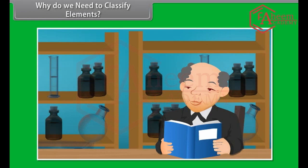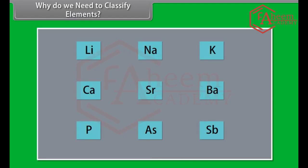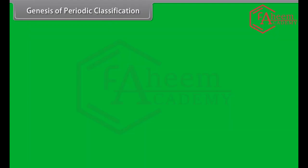Why do we need to classify elements? Before the beginning of the 18th century, few elements were known. As time passed, a large number of elements became known, and today we know 114 elements. It became quite essential to classify them. The classification of elements led to the formation of the periodic table, which may be defined as a table giving the arrangement of all known elements according to their properties, so that similar elements fall within the same vertical column and dissimilar elements are separated.